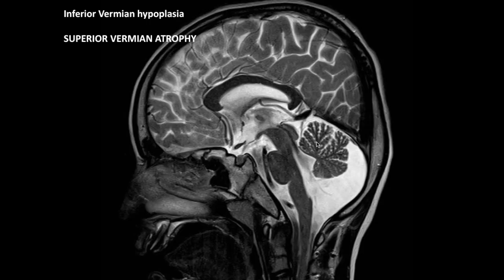Last week we discussed the mid-sagittal anatomy of the cerebellum and brainstem, and we tried to explain how you can differentiate between cerebellar vermis atrophy versus hypoplasia.